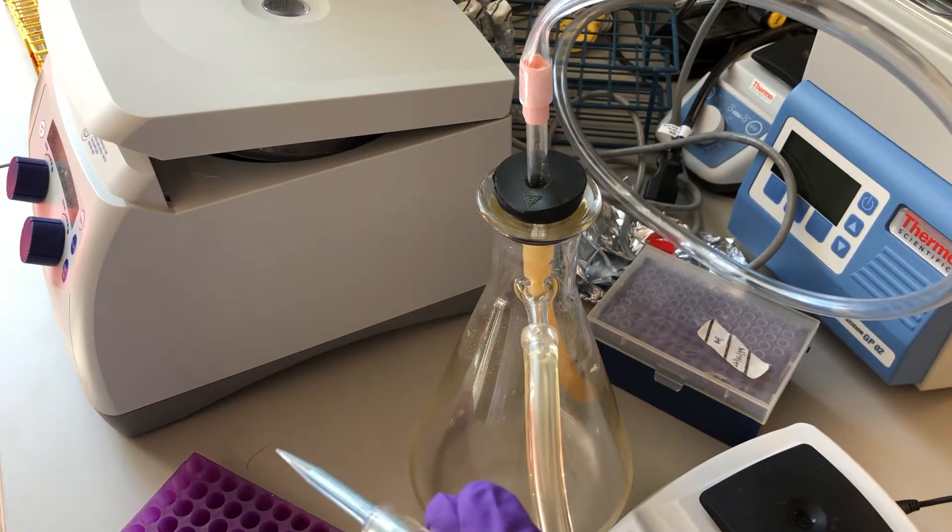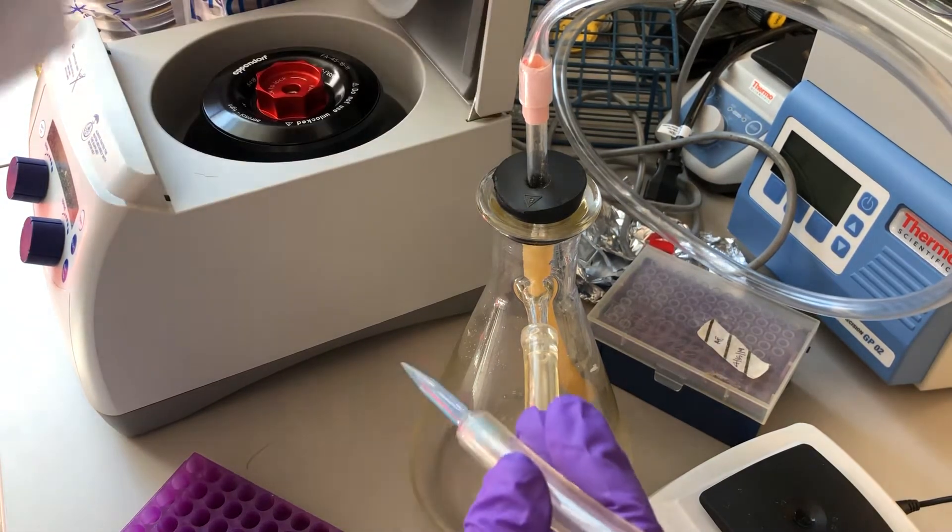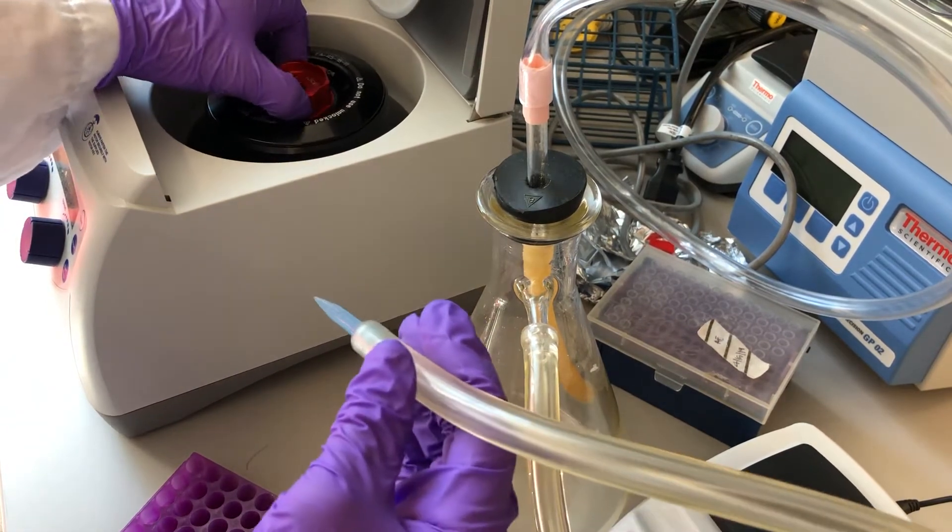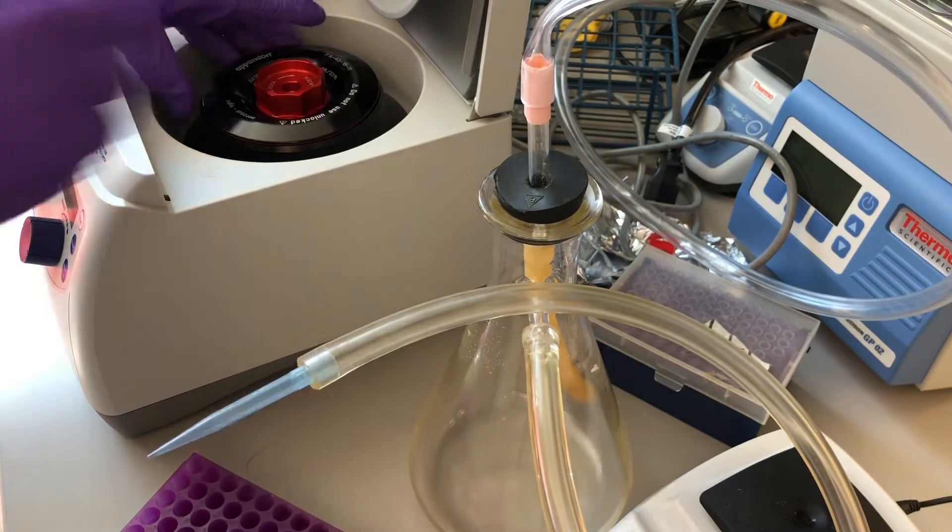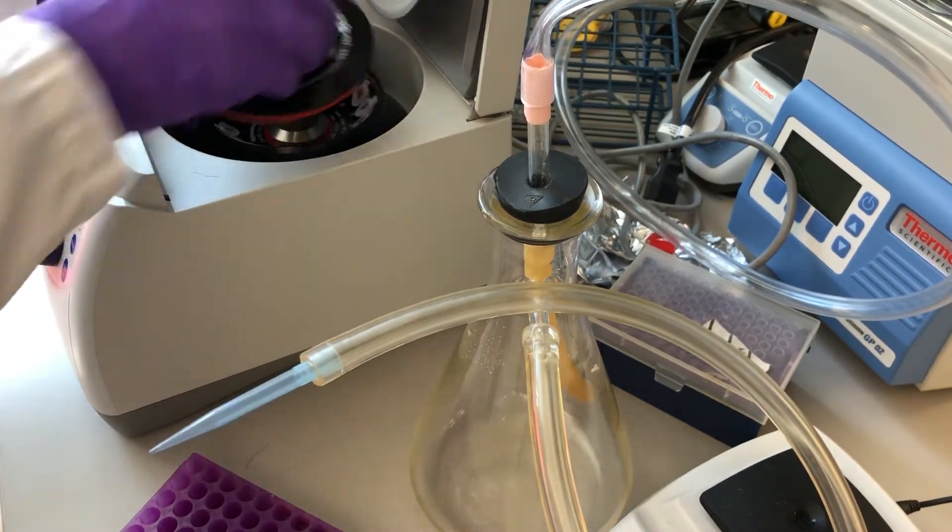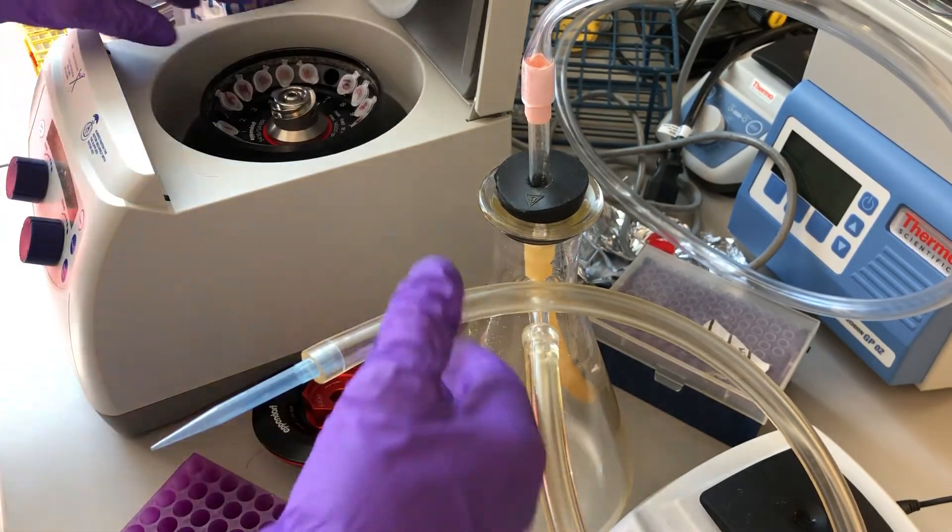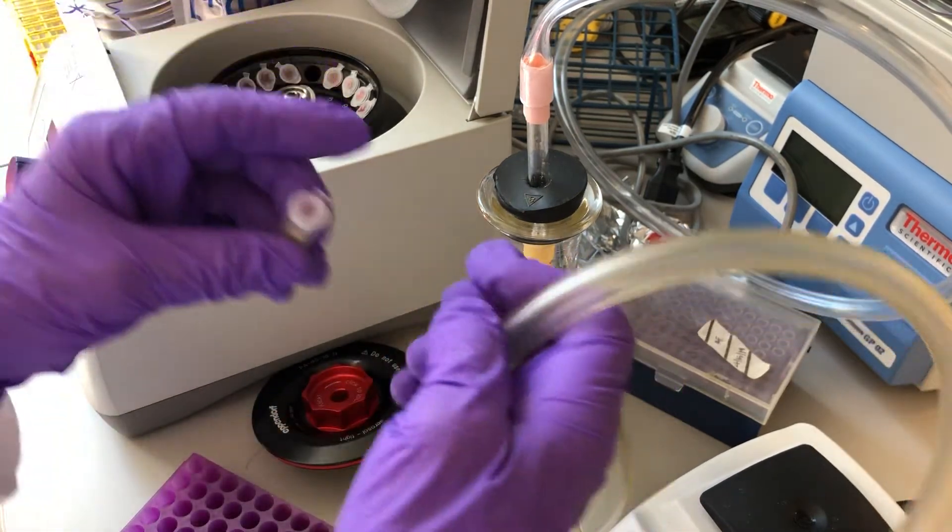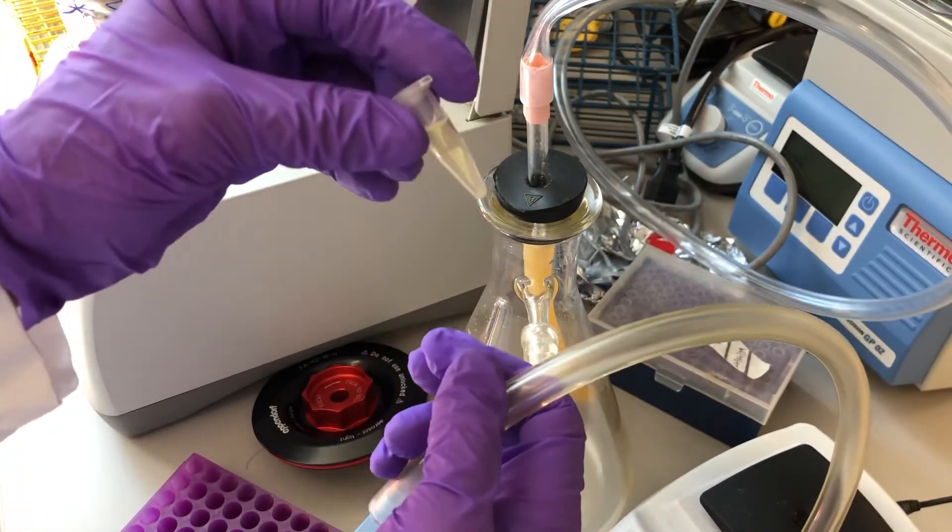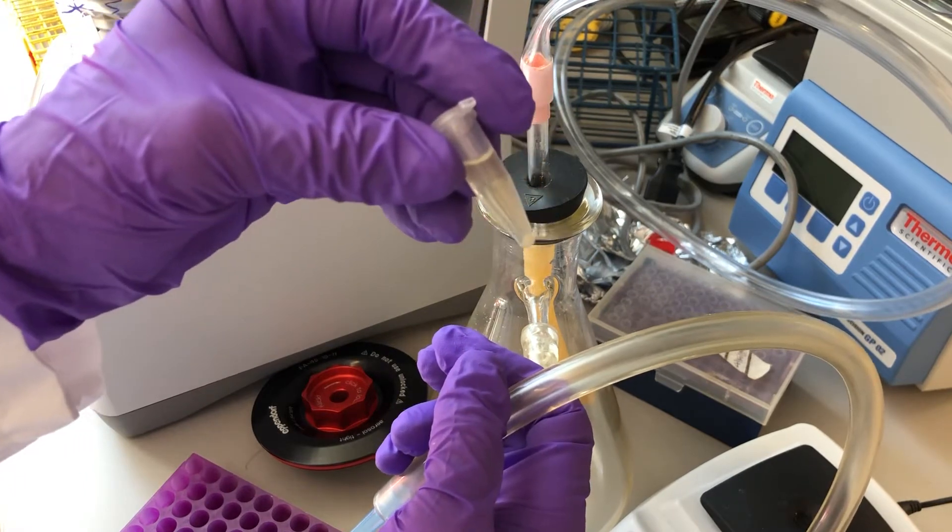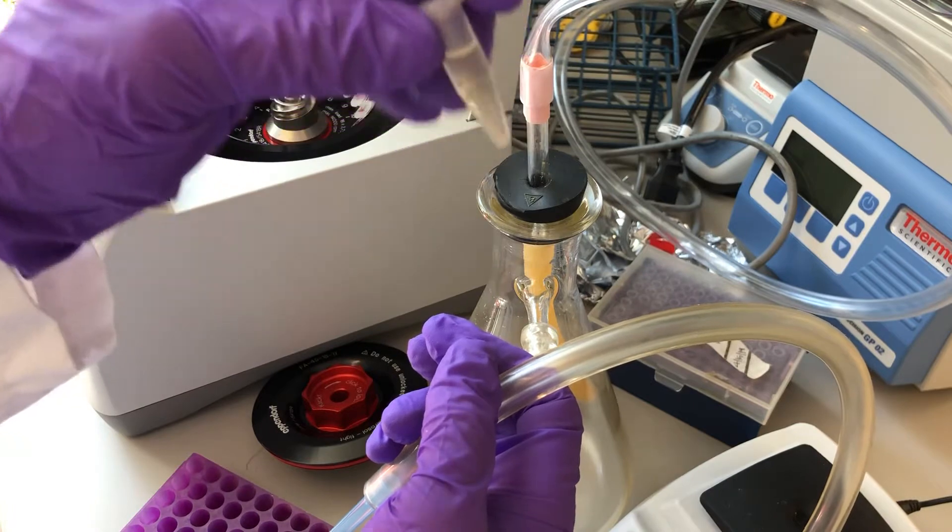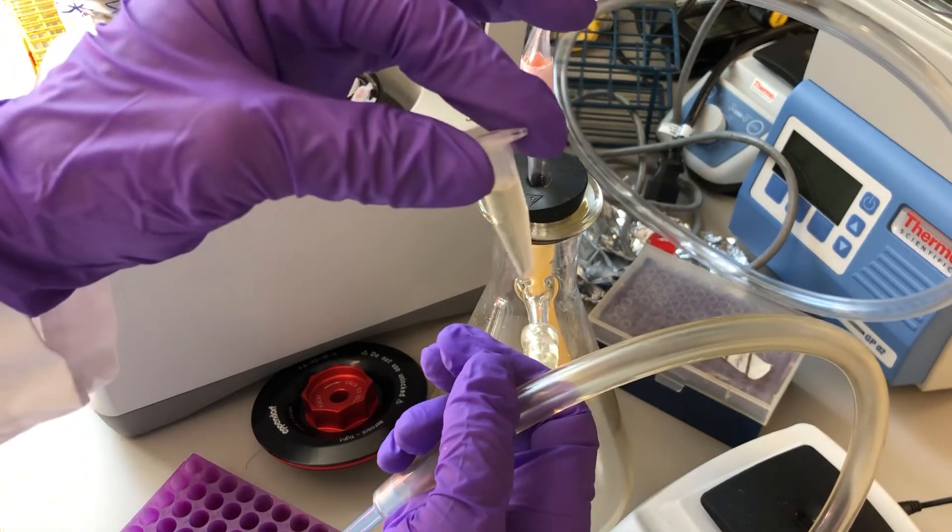So I'll be doing that for each of the harvested cells. Notice there's a pellet at the bottom of the tubes. That's where the cells are and the media is now clear of cells. It's more translucent than it was before.